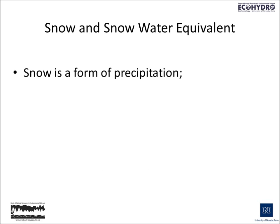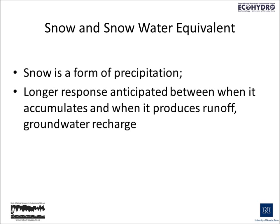We know that snow is a form of precipitation, but one of the things that makes it unique and difficult to work with involves the response time from when it accumulates and when it produces runoff and groundwater recharge. This is why we need a long time step in water balance analyses that includes systems that have significant accumulations of snow.